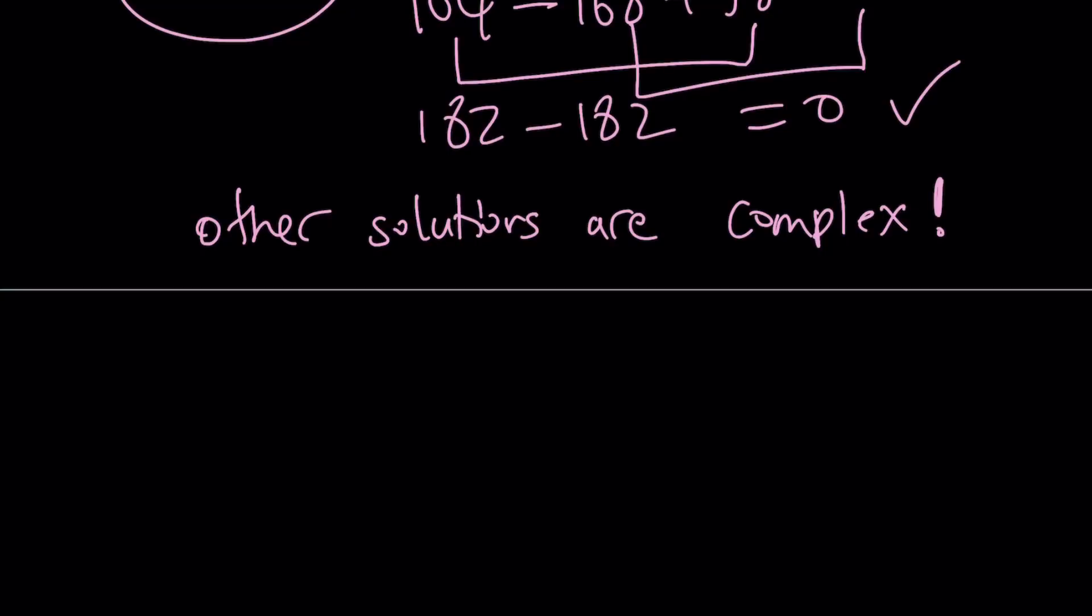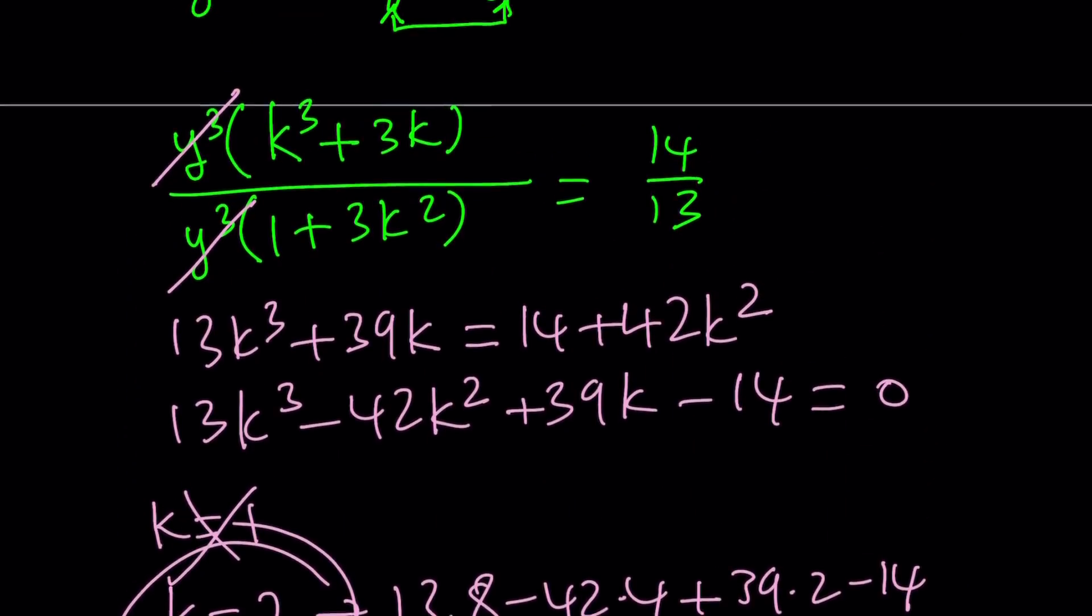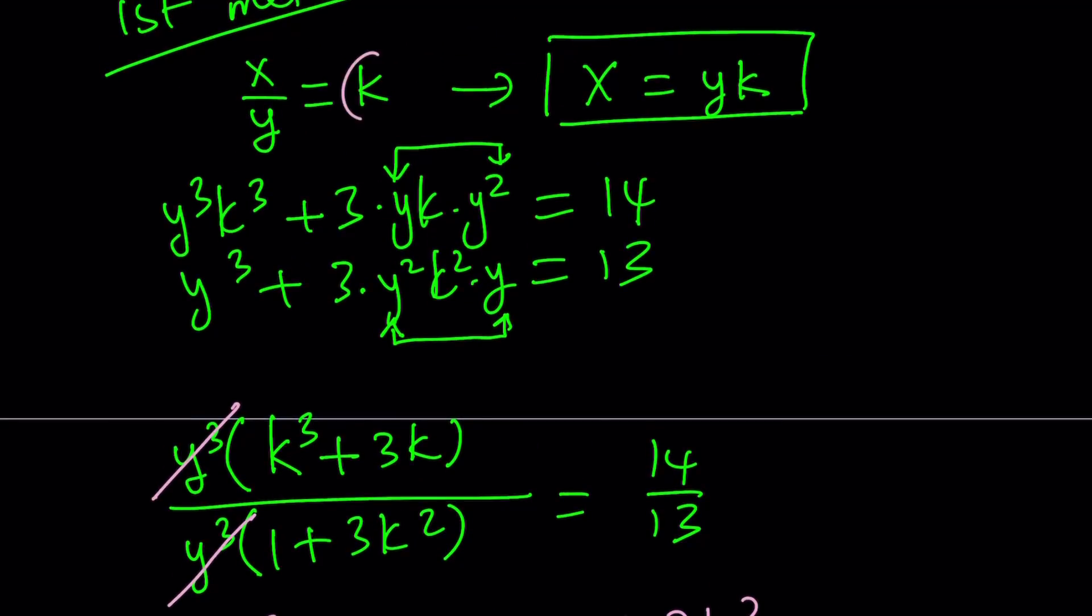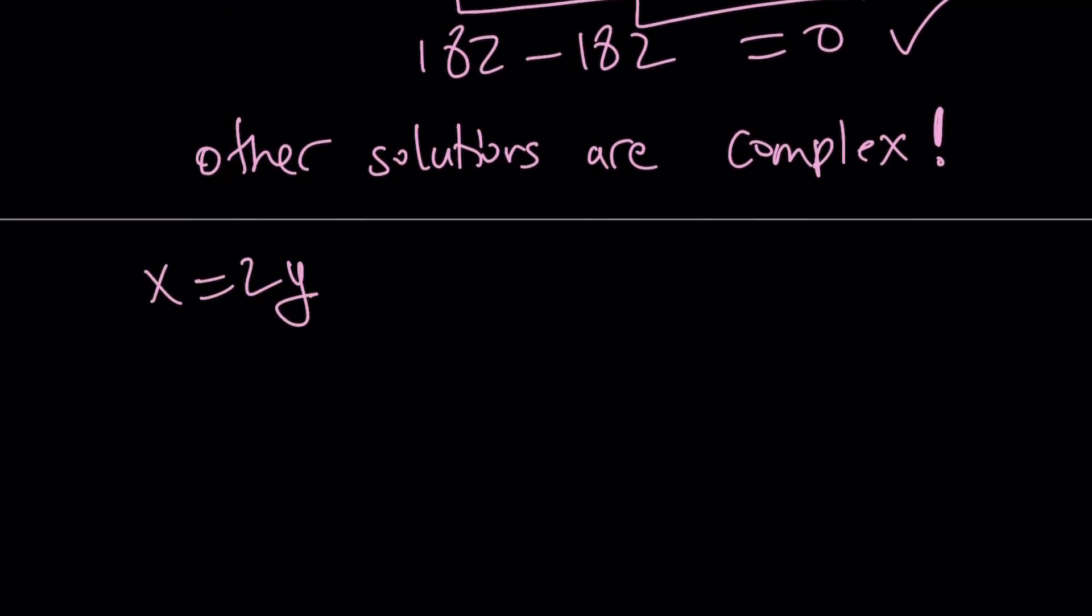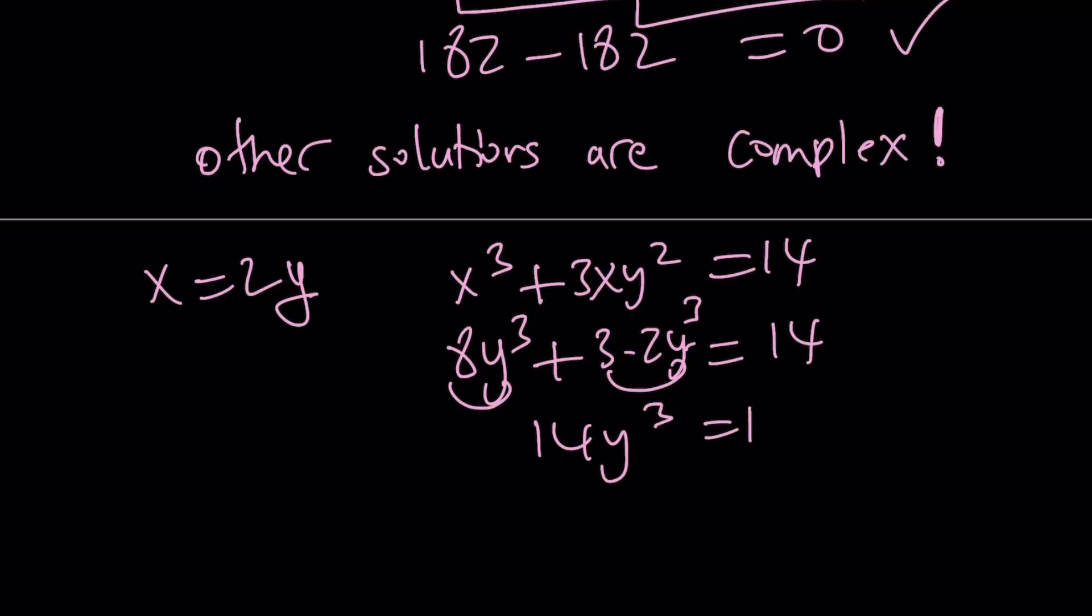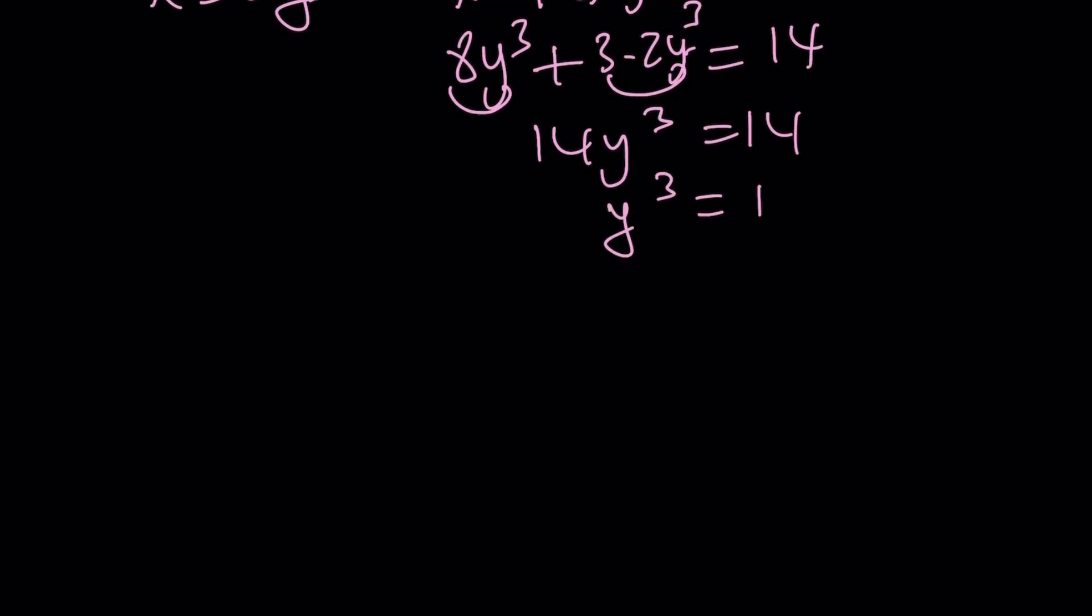So we found k, but how do you find x and y? Let's check it out. We know that k is equal to 2. So k is equal to x over y. So we can replace k with 2. And that gives us x equals 2y. So x equals 2y. And one of our equations was x cubed plus 3xy squared equals 14. Now we can replace x with 2y. That's going to give us 8y cubed. And 3 times 2y times y squared, it's just going to give us y cubed again equals 14. This is 8y cubed, 6y cubed, 14y cubed equals 14. And y cubed equals 1. And y equals 1. And y equals 1 implies x equals 2. Because x is 2 times y.